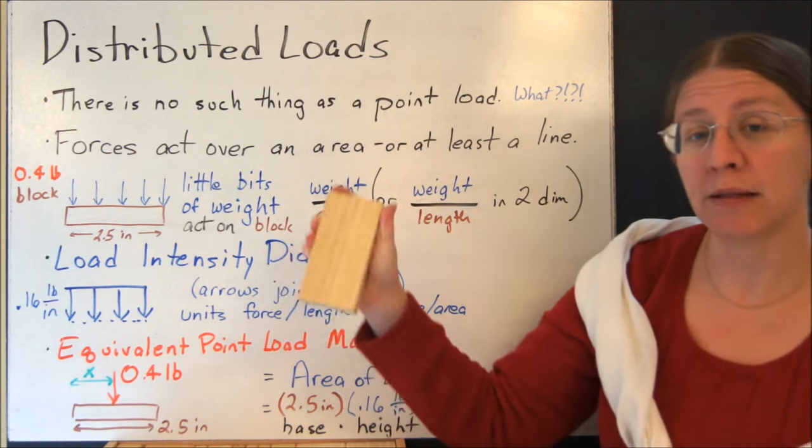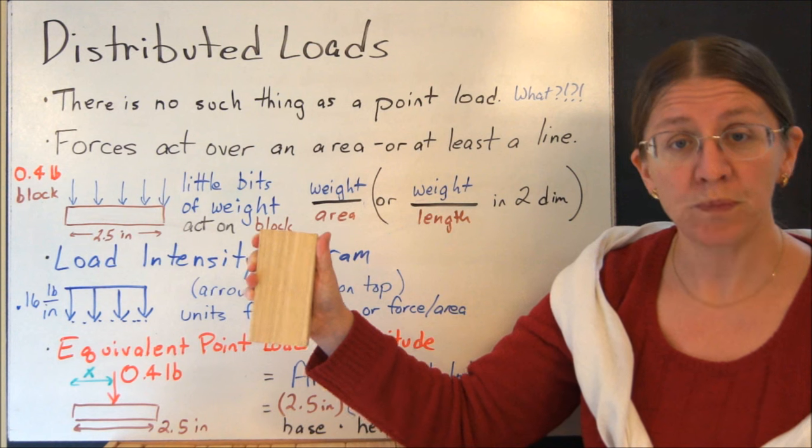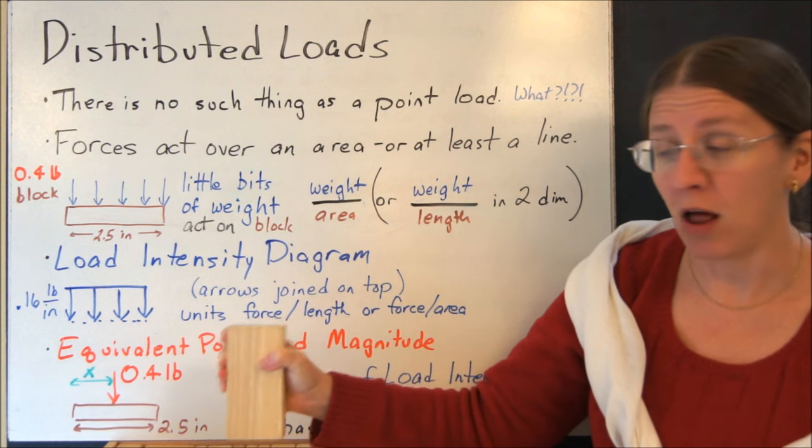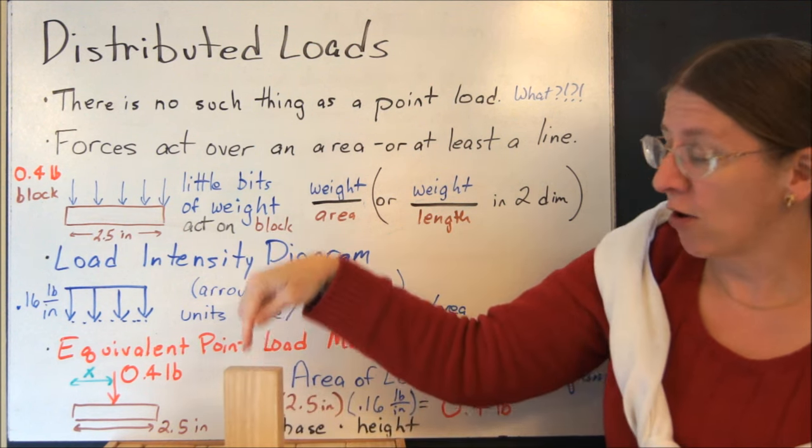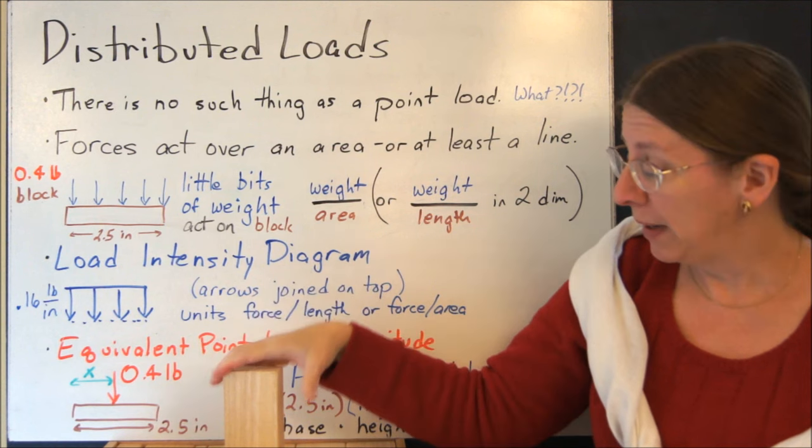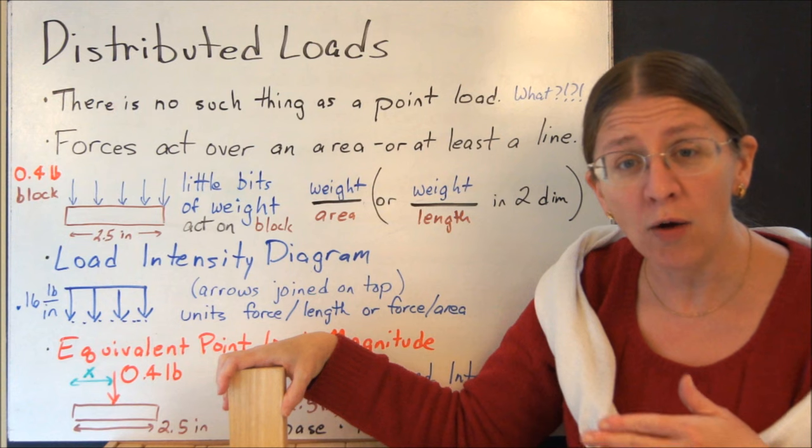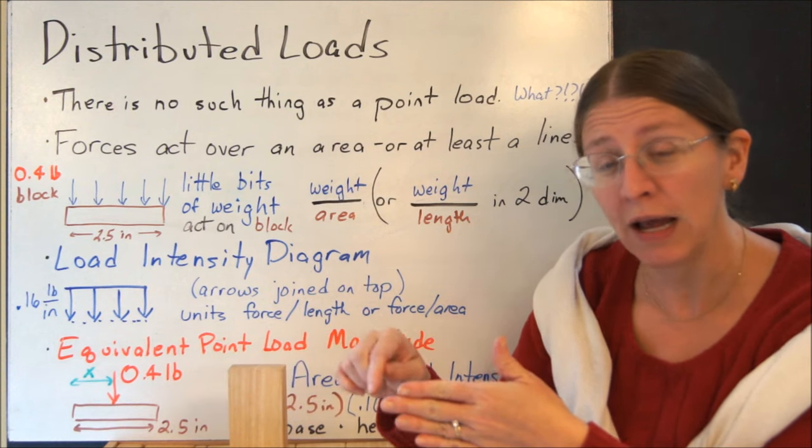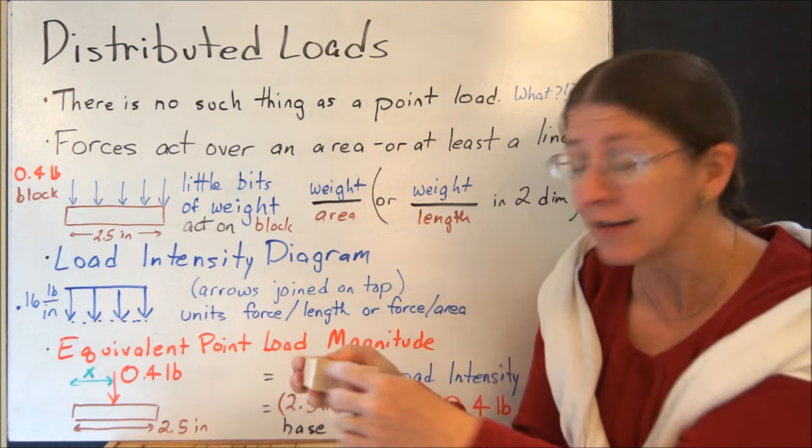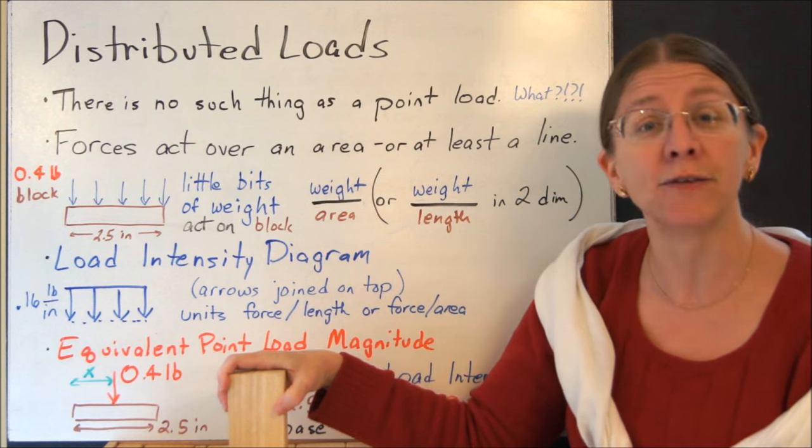If you think about the weight of a block, we've modeled that all along as a single arrow acting down in the middle. But it's not like if I put that on the table, an ant could crawl right up to the arrow and then be okay, and then be real okay again right on the other side of the arrow. If he's anywhere under there, I can squish him.